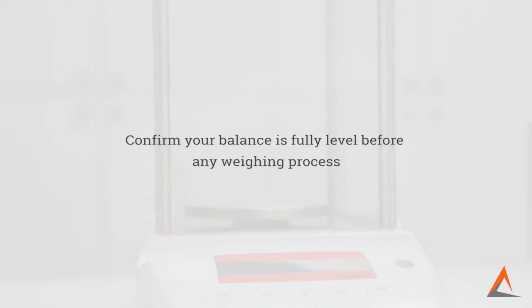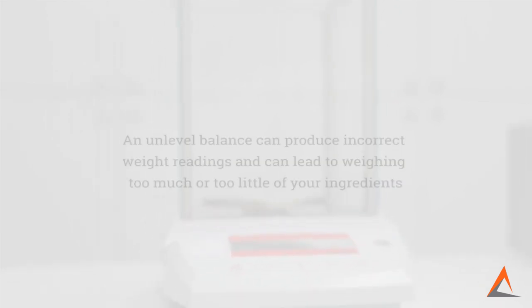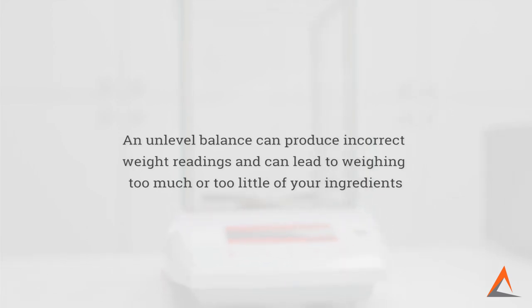After you have selected the most suitable location for your electronic balance, the next step is to ensure it is level. You always want to confirm that your balance is fully level before any weighing process, as an unlevel balance can produce incorrect weight readings and can lead to weighing either too much or too little of your ingredients.